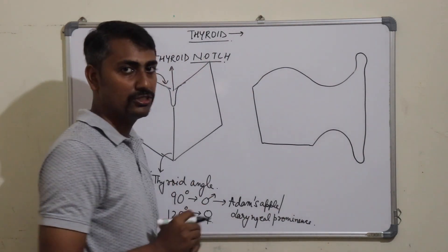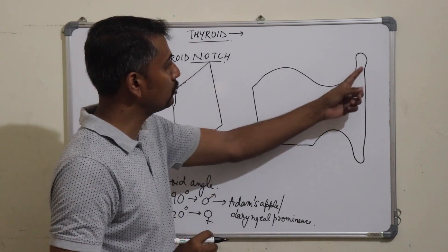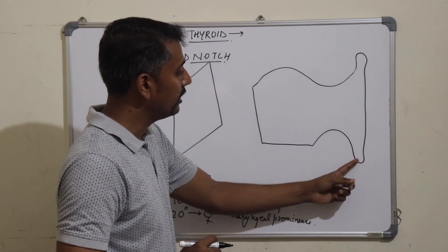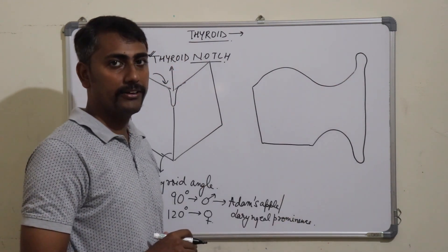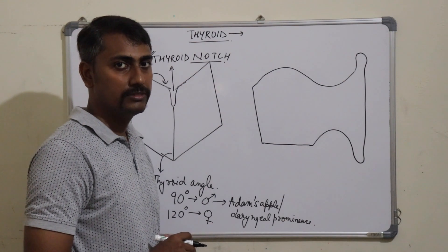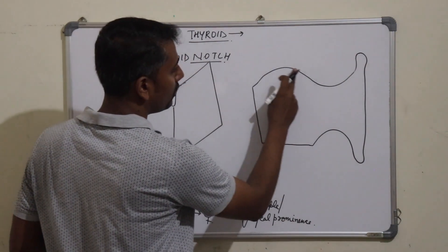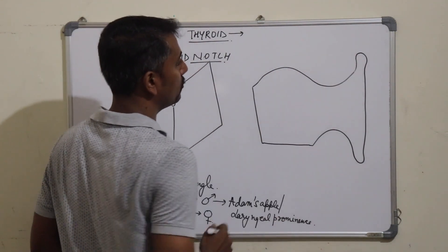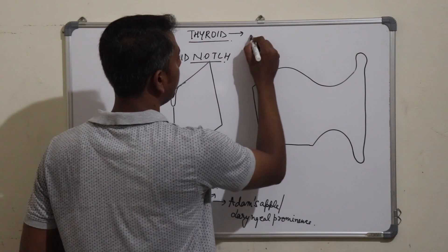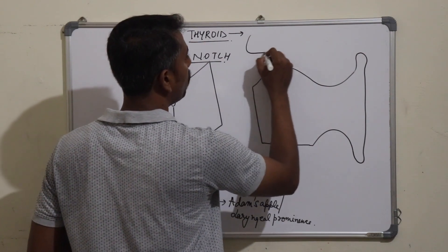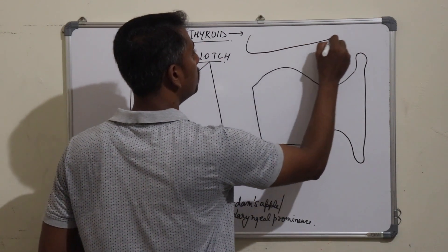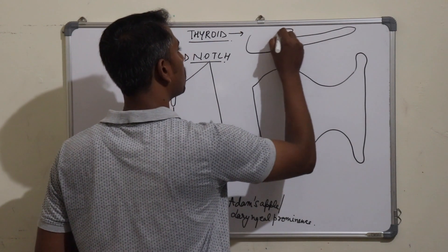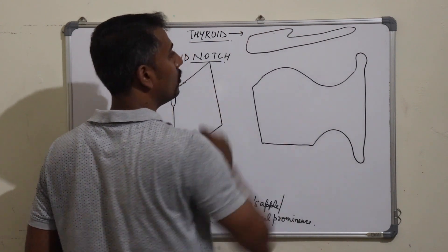The posterior borders are free and extend upward as a superior cornu and downward as an inferior cornu of the thyroid cartilage. The upper border of the thyroid cartilage as well as the superior cornu is attached to the hyoid bone above, via the greater and lesser cornua of the hyoid bone.